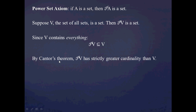But by Cantor's theorem — which you'll encounter in Part 17 — the power set of any set has a strictly greater cardinality than the set itself. Cardinality is, informally speaking, the number of members in a set. So the power set of V must have strictly greater cardinality than V. But we just said the power set of V is a subset of V. That's a contradiction, and this is the second argument against the existence of a set containing everything.